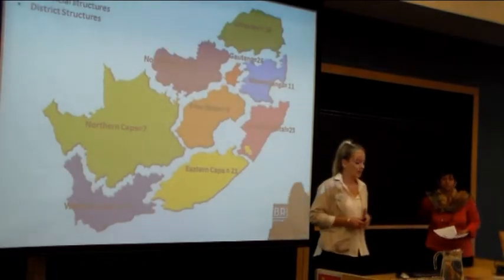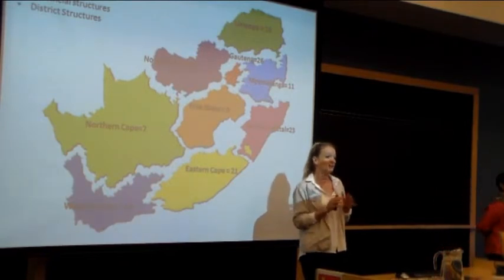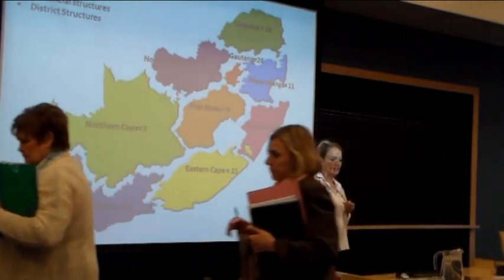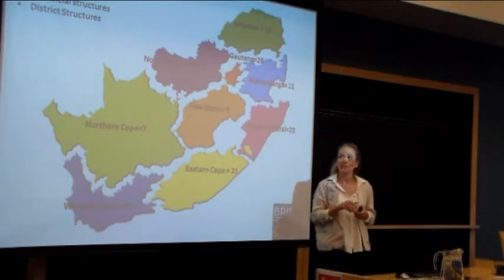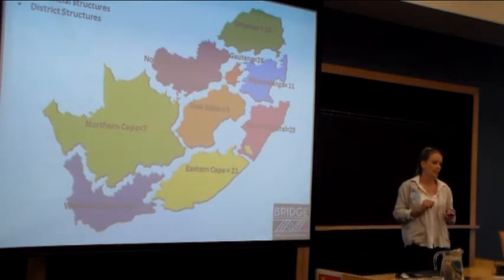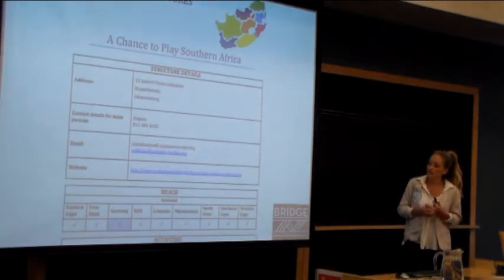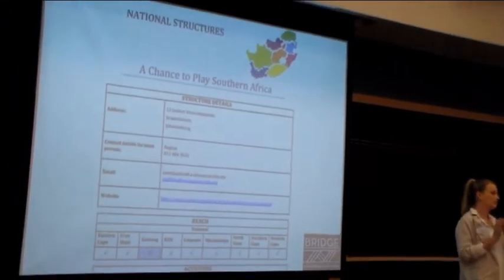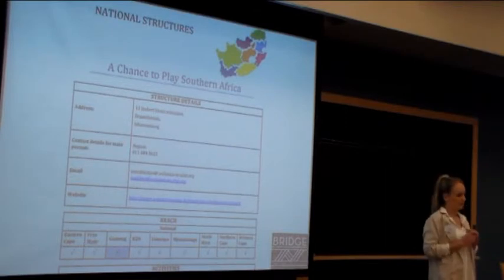Through our mapping, we actually found information from over 100 different ECD structures in South Africa. We mapped the national, provincial and local structures, and here you can see a spread of the structures that we came across. We've organised this information in a document for everyone to access at those different levels.